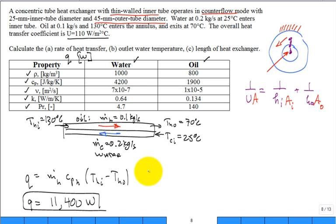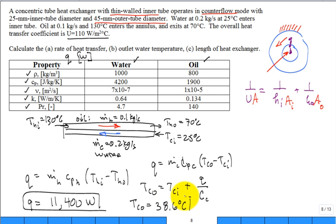For part B, so what we have is Q is equal to what goes into the cold. And what goes into the cold is mass flow rate of the cold, specific heat constant pressure of the cold, temperature cold out minus temperature cold in. Hence, the temperature cold out will be the temperature cold in plus Q divided by heat capacity rate of the cold fluid, cap C of the cold fluid. But that's just a product. And so when we run that number, the temperature of the cold out comes in at 38.6 degrees C.